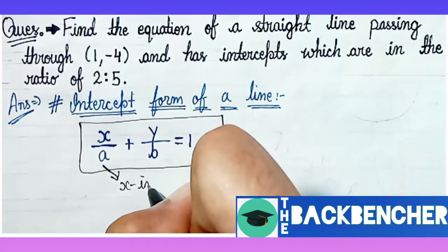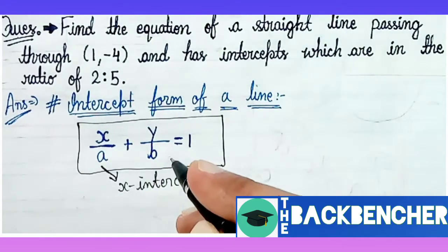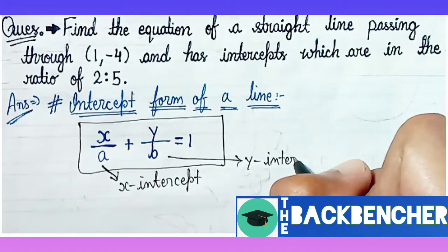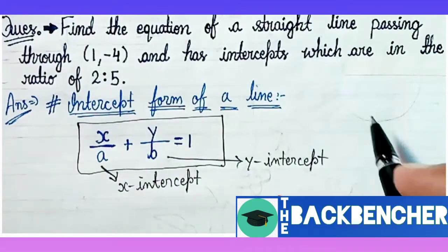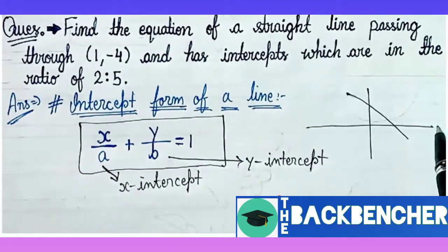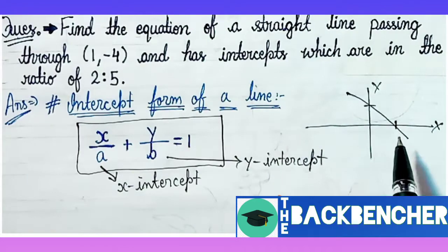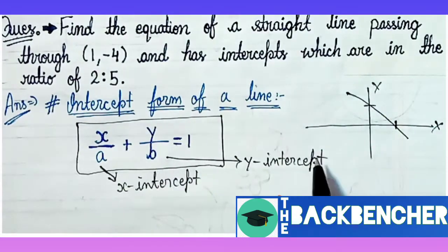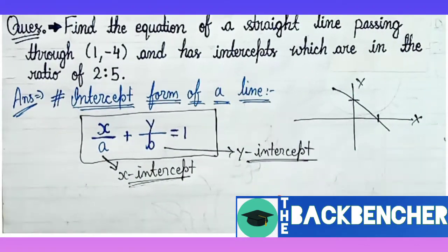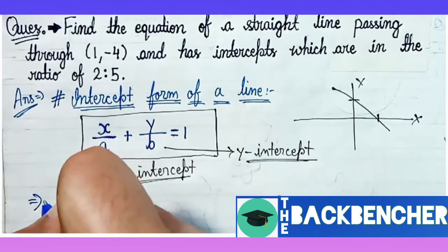Line ko likhne ke bohot tariqe hote hain. This is one of the forms when a line has intercepts. Intercept means when it cuts the x-axis and y-axis. Here a and b are the x and y intercept of that line. We'll make a diagram on the cartesian plane where the line cuts the x and y axes. Where it cuts the x-axis, that's a or x-intercept. The y value where it cuts is called y-intercept.